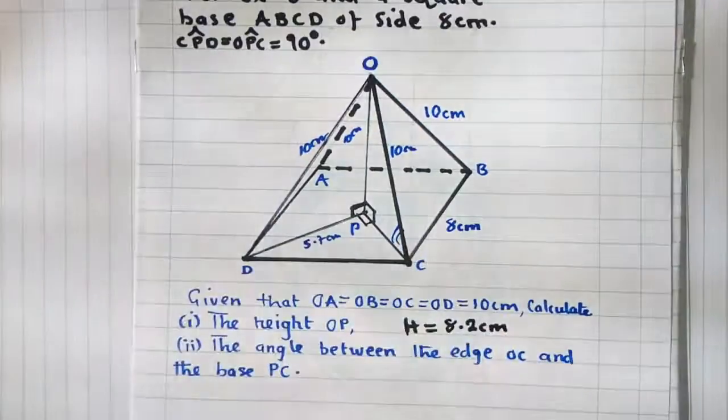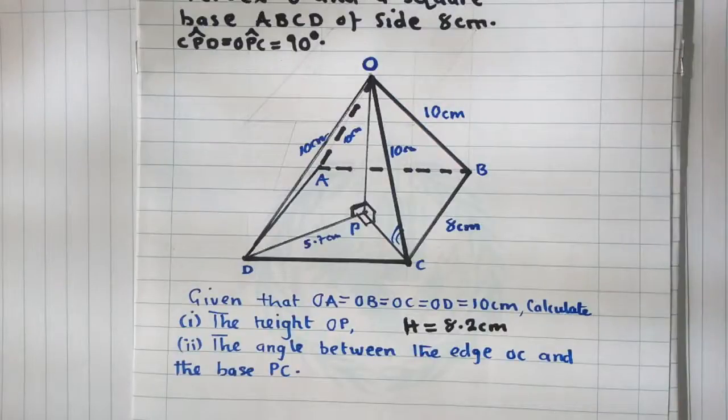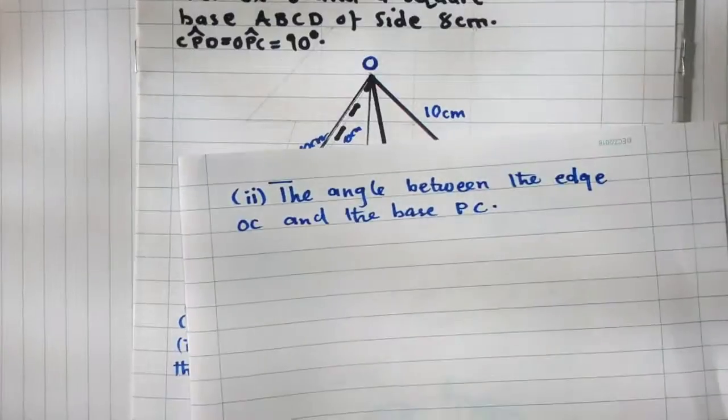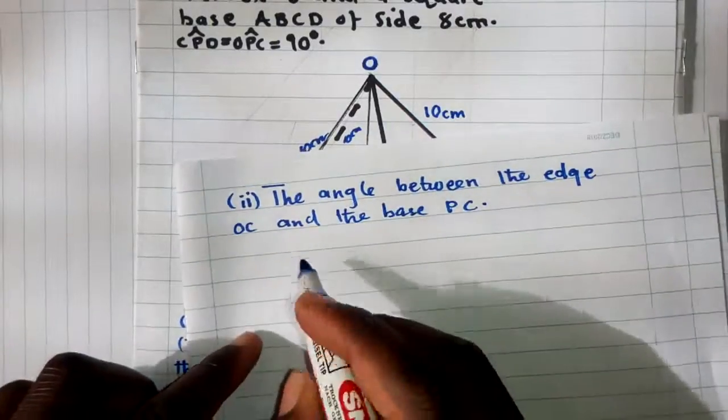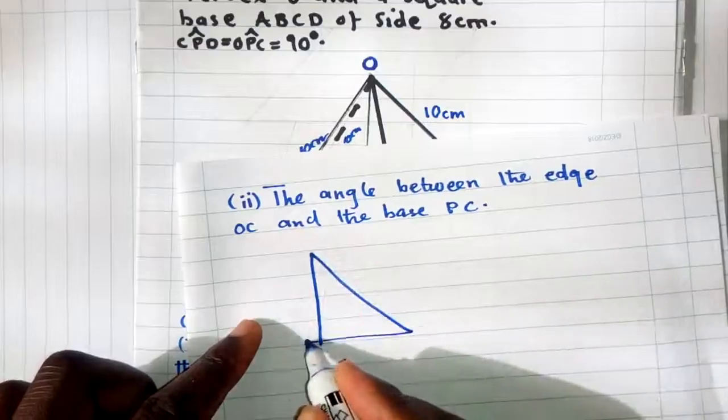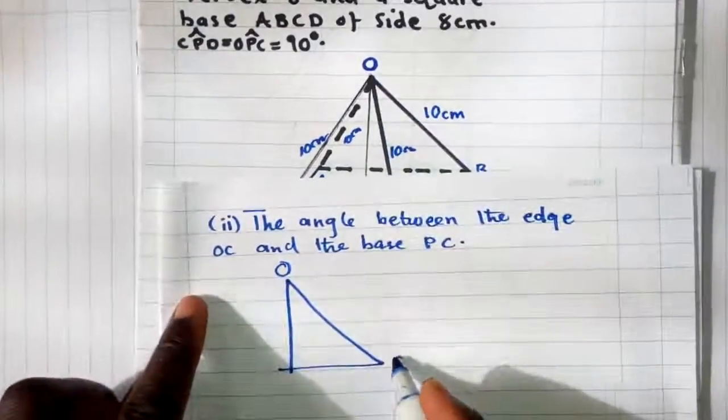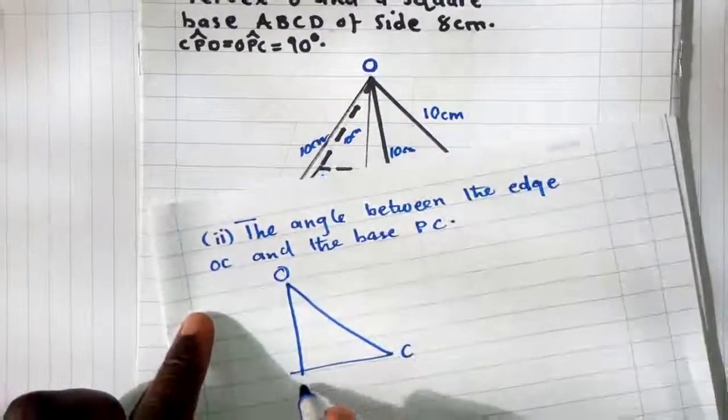So let me just put it here. It's like this. This is our O is over here, and then C is here, the P is here.